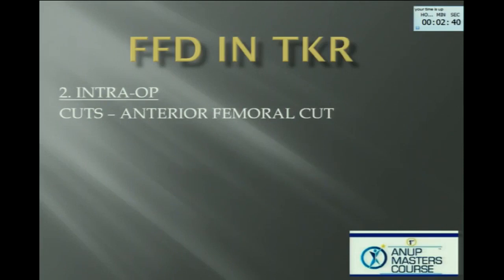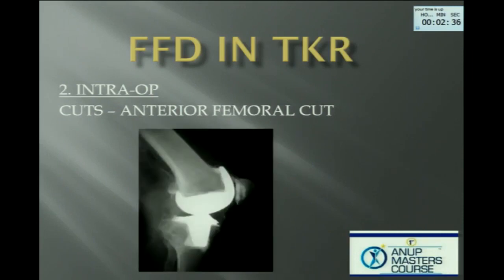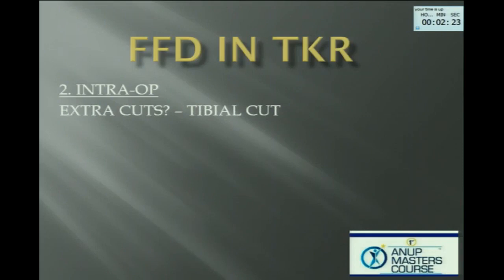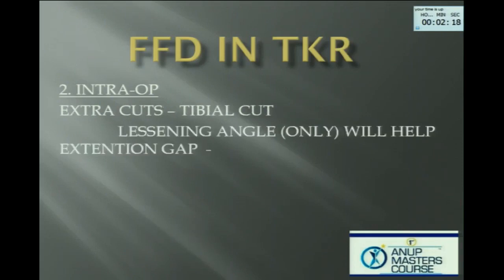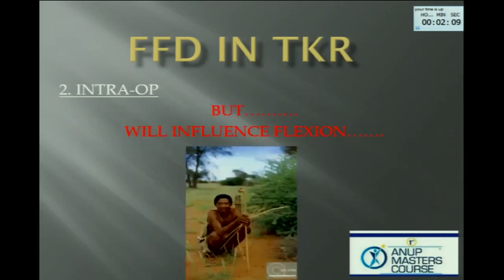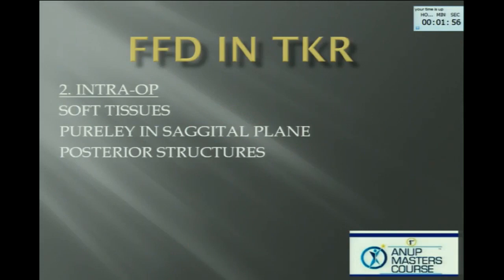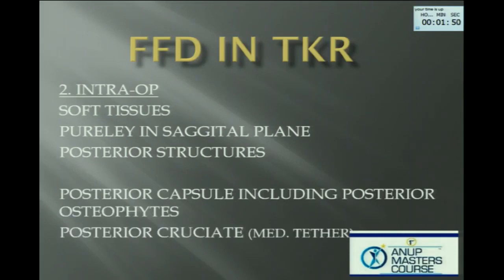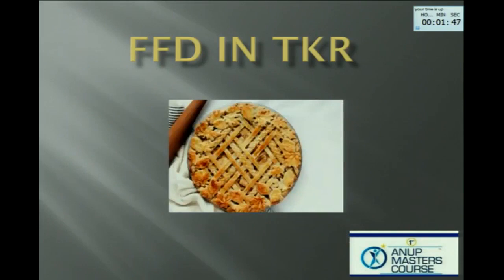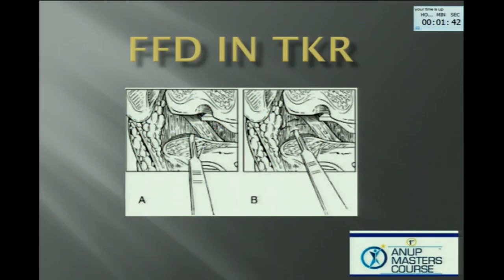The anterior femoral cut — why is that important in sagittal plane deformity? If you put your femoral cut wrong, you will get your femoral component in flexion and your flexion deformity will not correct. Regarding tibial cuts: some people believe that lessening the angle will help with the extension gap, but remember it influences the amount of flexion your patient will get, especially people who squat a lot. For soft tissue — the problem lies at the posterior aspect because of shortening. The posterior capsule, the osteophytes, the posterior cruciate — you can use a needle or a knife, but be careful because the knee will give way unexpectedly.